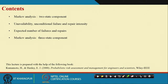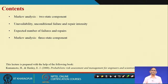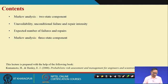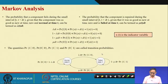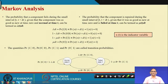We will see Markov Analysis with respect to a 2-state component, and then we will calculate the unavailability, the unconditional failure and repair intensity, and the expected number of failures and repairs. Then we will go for 3-state Markov Analysis. Our material is primarily chosen from a reference book.